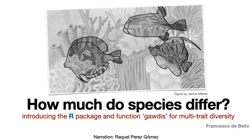We introduce here a new R function, Gaudis (with an A), that improves earlier R functions in solving this key methodological step.